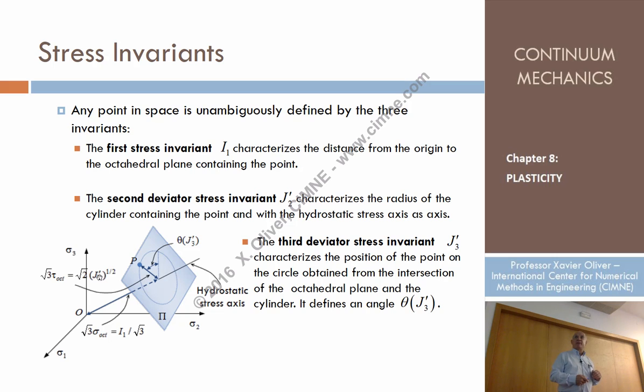Second invariant J'2 defines the position in a circle on the octahedral plane. And, of course, by elimination, just J'3, the third invariant, determines the angle with a certain position, reference position, the angle that determines the final position.